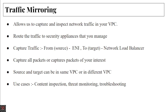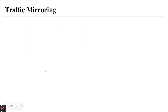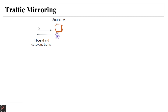Now let's see how traffic mirroring actually works. Here we have a source — an instance — with inbound and outbound traffic associated with it. We are going to capture this traffic and analyze it. This is the source where we capture the traffic, and we need a target, which is the network load balancer where we will analyze this traffic data.